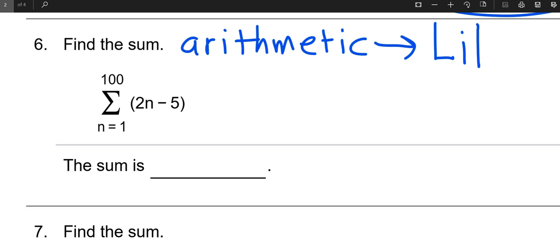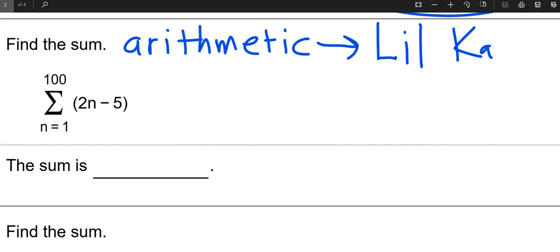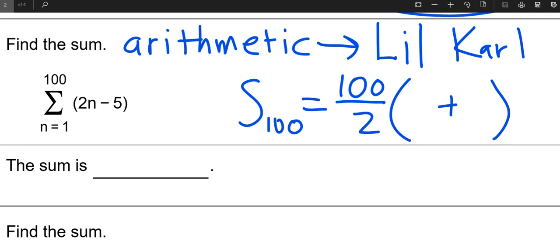We're using little Carl's formula because that's what you use for arithmetic series. We need to know how many terms there are, there's one hundred terms. We need to know the first term and we need to know the last term. So we know there's one hundred terms. How do we find the first term? That's easy, plug in a one. What is two times one minus five? Two times one minus five, well that's easy, that's negative three. Now I need to plug in one hundred to find the last term. Two times one hundred minus five, that'd be one ninety-five. And then I can type it on my calculator.